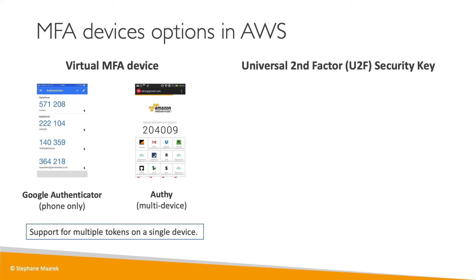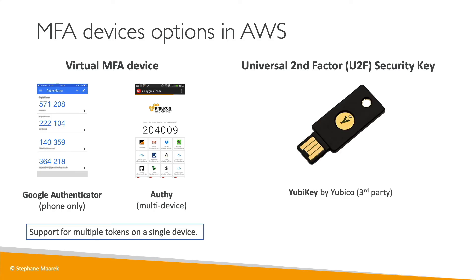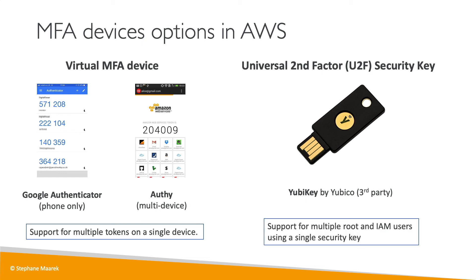We also have something called a Universal Second Factor, or U2F, security key. That is a physical device — for example, a YubiKey by Yubico, which is a third party to AWS. You use a physical device because it's super easy — you put it on your key fob and you're good to go. This YubiKey supports multiple root and IAM users using a single security key, so you don't need as many keys as users, otherwise that would be a nightmare.